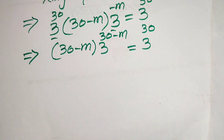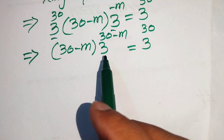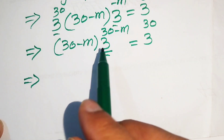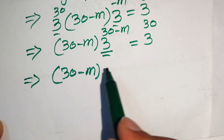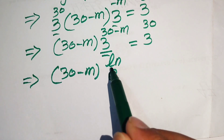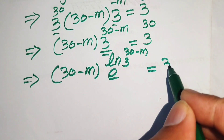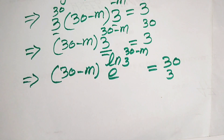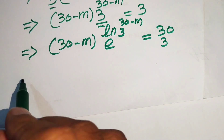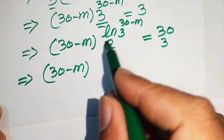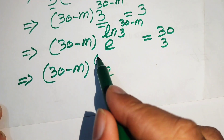Now we make the exponential function with base e. To do this, we take the log and anti-log at the same time on this term. The expression becomes 30 minus m times e to the power of log of 3 to the power of 30 minus m equals 3 to the power of 30. We move the exponent to the front of the log using the log property.